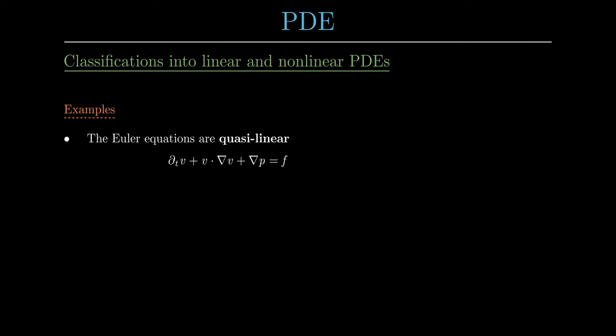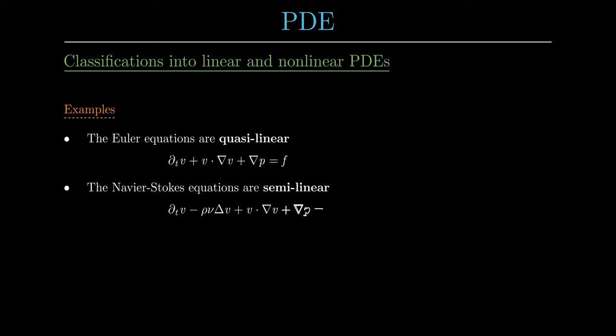The Navier-Stokes equations are semi-linear. The highest-order derivative is now the Laplacian, and the term in front of the Laplace operator does not depend on u. Thus the highest-order derivatives satisfy the definition of a linear PDE. However, there is also a lower-order nonlinearity, as in the Euler equations. Therefore the Navier-Stokes equations are semi-linear.